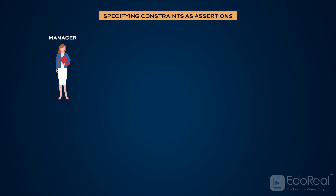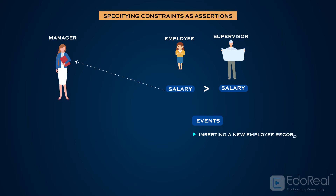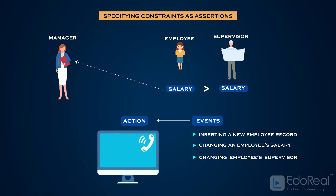Suppose a manager wants to be notified whenever an employee's salary is higher than the salary of his supervisor. Several events can trigger this rule: inserting a new employee record, changing an employee's salary, or changing an employee's supervisor. The action to take would be to call an external stored procedure, which will notify the manager.